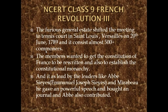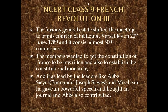They took an oath that until their demands were heard and France became a constitutional monarchy, they would not disperse. Almost 500 plus commoners were assembled, feeling humiliated at being locked outside. They wanted the French constitution to be rewritten and constitutional monarchy established. This movement was led by leaders like Abbe Sieyes and Mirabeau.